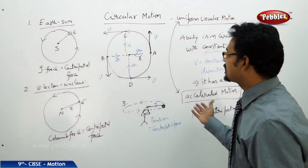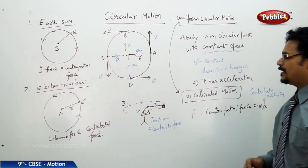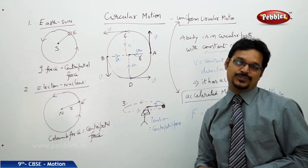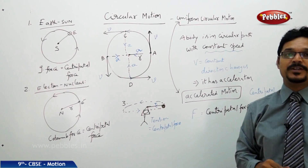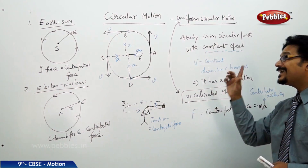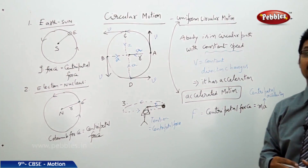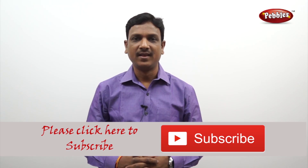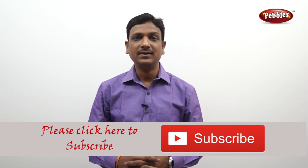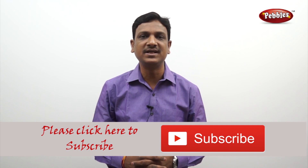In this lesson we learned what circular motion is, why it is called uniform circular motion, and different examples of circular motion. We also learned about centripetal force, which keeps the body in the circular path. For more about centripetal force, you will learn in higher classes. If you like this video, please give a thumbs up and subscribe to our channel to get more videos on the CBSE syllabus.